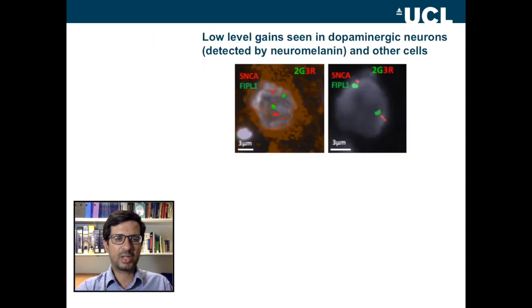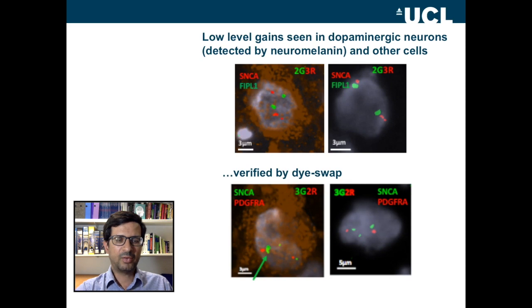We then moved on to substantia nigra thin sections, where we can distinguish the dopaminergic neurons because of the granules in the cytoplasm — the dark brown ones on this slide, which is neuromelanin. Both cell types, the neuromelanin-positive dopaminergic neurons and other cells, can have gains of alpha-synuclein, shown as extra red dots. We can say there's at least one gain in these cells. To confirm this isn't an artefact of the colors, we did the same thing with a different color, and we get the opposite image when synuclein is shown in green. One cell pointed to by an arrow looks like it has one very large extra signal, possibly many copies, though a precise estimate is difficult.